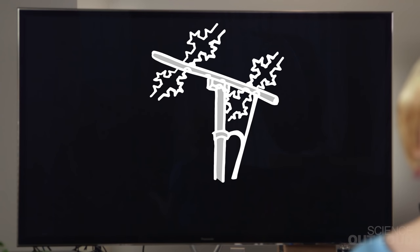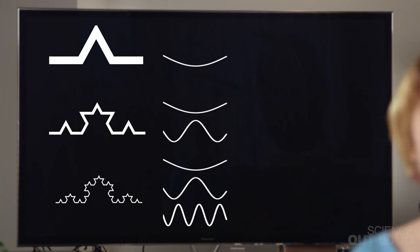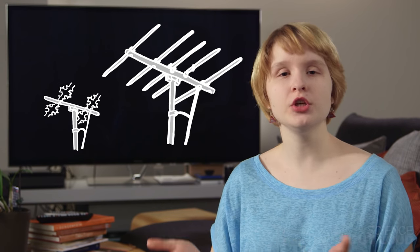But fractal antennas are different. As the fractal repeats itself more and more, the fractal antenna can pick up more and more signals, not just one. And because the perimeter of the Koch snowflake grows way faster than its area, the fractal antenna only takes up a quarter of the usual space.